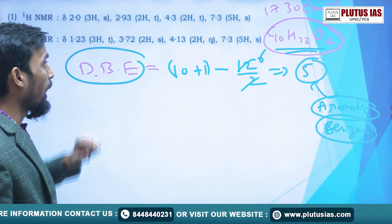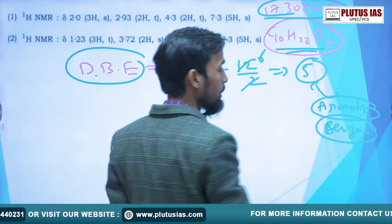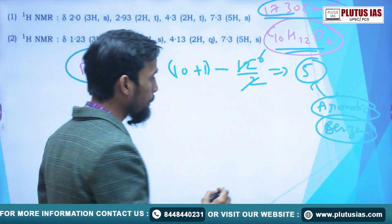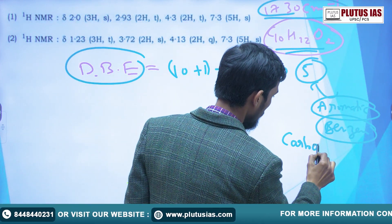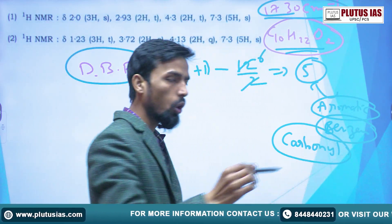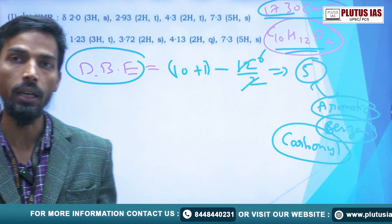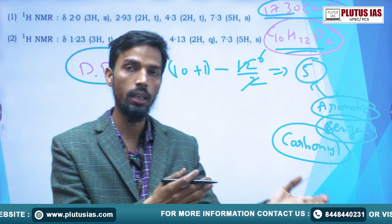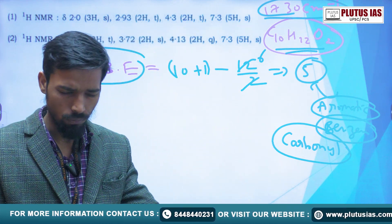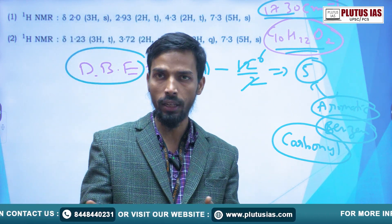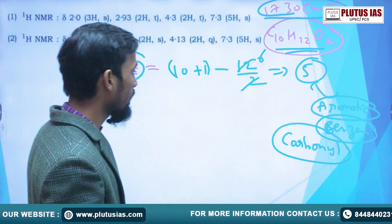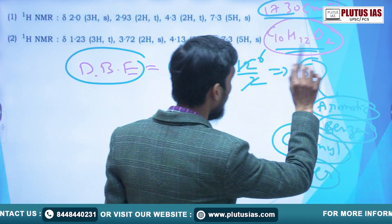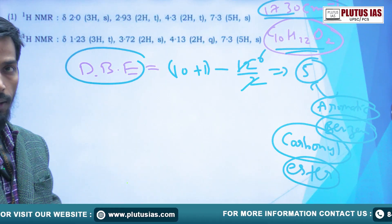Looking at the IR spectrum, the peak is at nearly 730 cm⁻¹, which signifies that a carbonyl compound is present. It is looking more like an ester peak. Aldehyde and ketone can also sometimes show this type of peak, but this is mostly looking like an ester peak because the ester range is nearly 720 to 740 cm⁻¹.